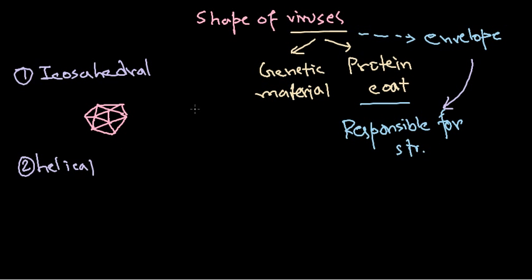The helical virus is a very simple kind of structure. It looks like a helix — we all know how a helix looks. It will be much more compact in nature, having a helix shape that could be left-handed or right-handed. So these are the two major types of structure that viruses usually obtain.